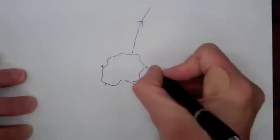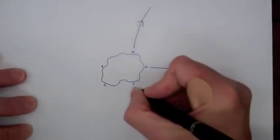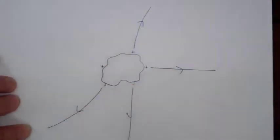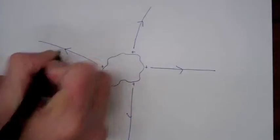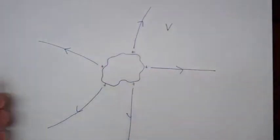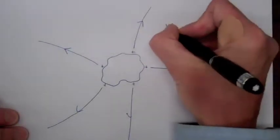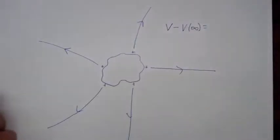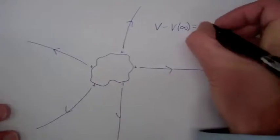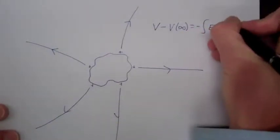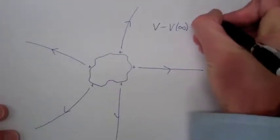And the electric field therefore emanates out normal from the surface. Now let's let V represent the potential of this object — the potential difference between this object and infinity, or in other words, the amount of work it takes to bring one coulomb of charge from infinity to this object — which is minus the integral of E dot dl from infinity to the object.